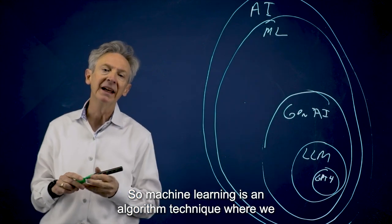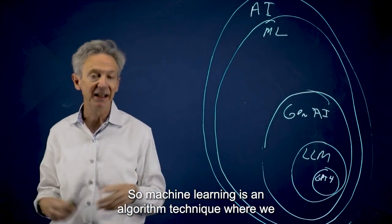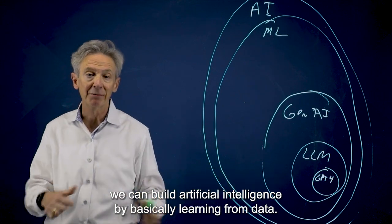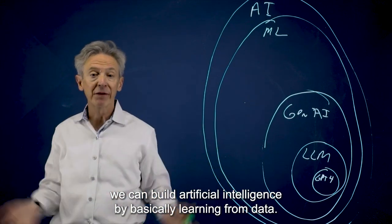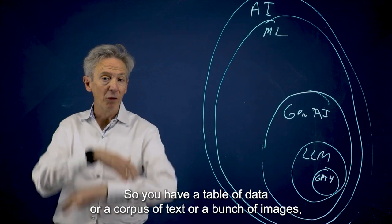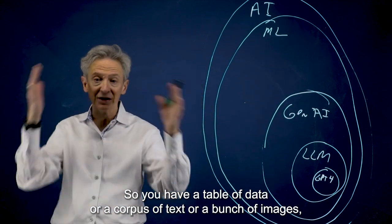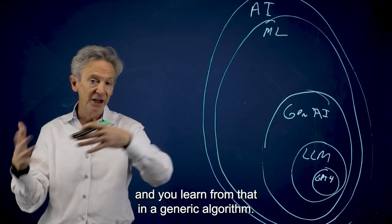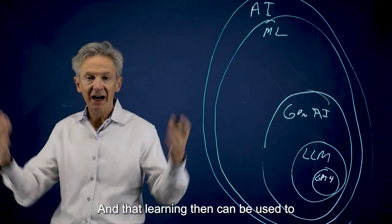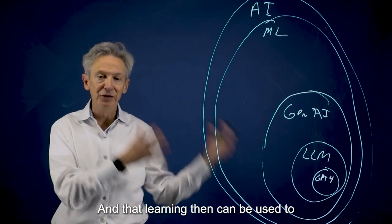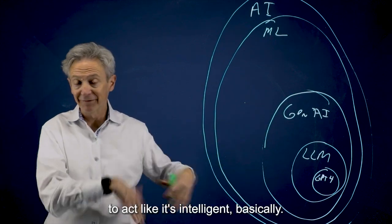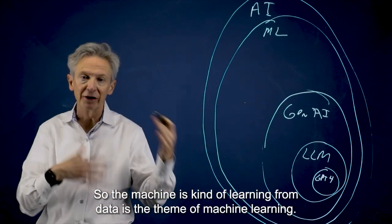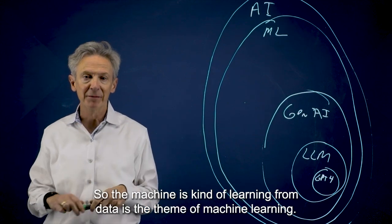So machine learning is an algorithm technique where we can build artificial intelligence by basically learning from data. So you have a table of data or a corpus of text or a bunch of images, and you learn from that in a generic algorithm. And that learning then can be used to act like it's intelligent. So the machine is learning from data is the theme of machine learning.